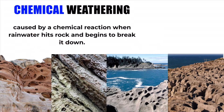Now there are two types of weathering. The first is known as chemical weathering, and chemical weathering involves a chemical reaction, usually involving rainwater or seawater hitting the rock and beginning to break it down.